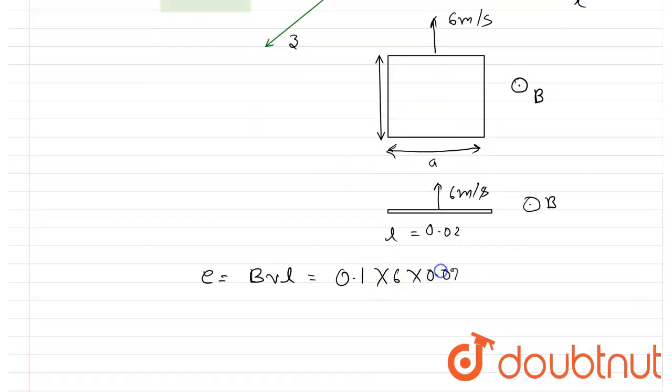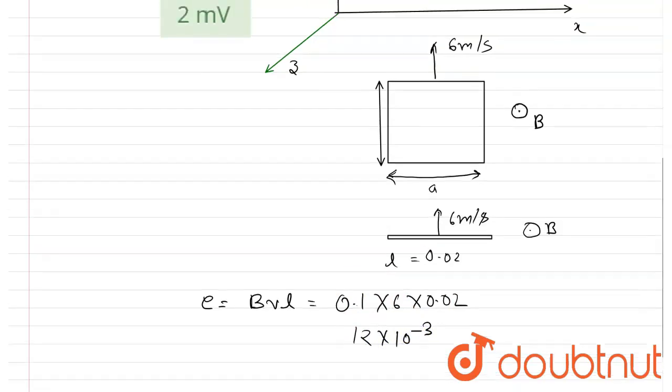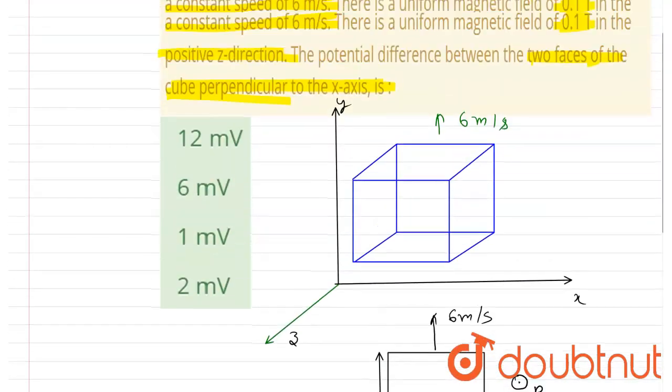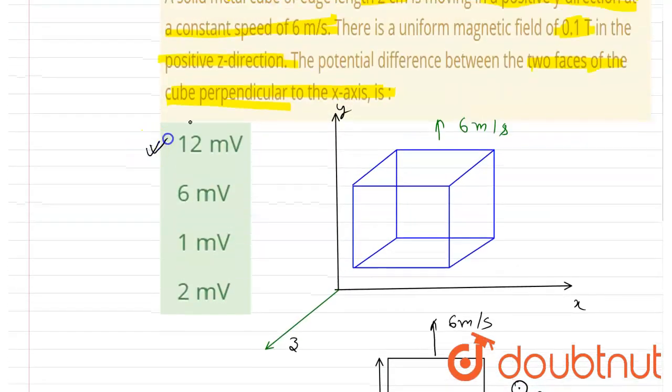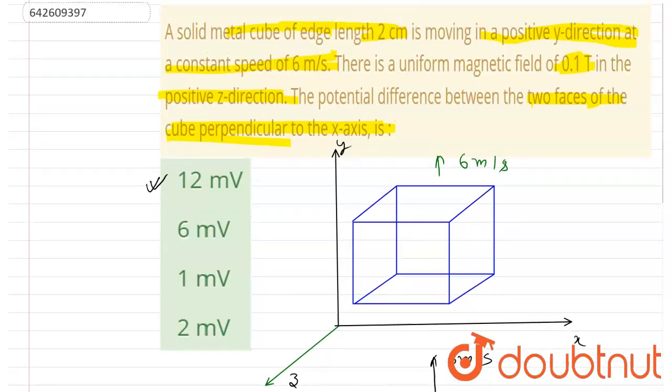is 6 meters per second and the side length is 0.02. So just put all the values. So now you can see this will be 12 into 10 to the power minus 3. So now if you see the options, 12 millivolts is the correct option. Thank you.